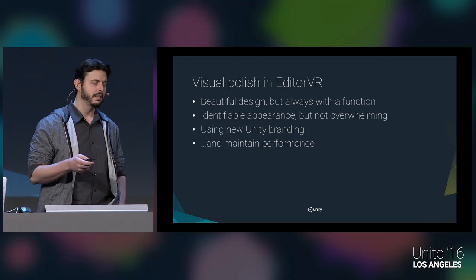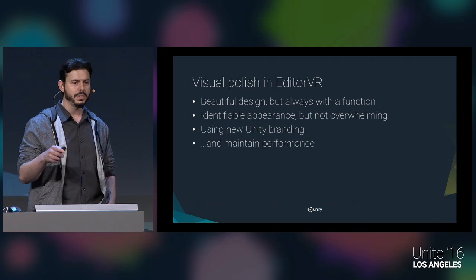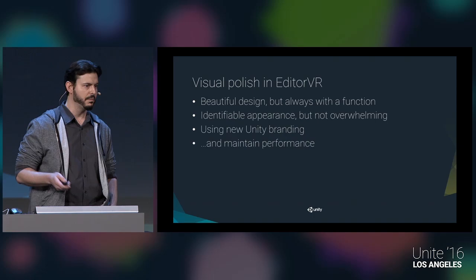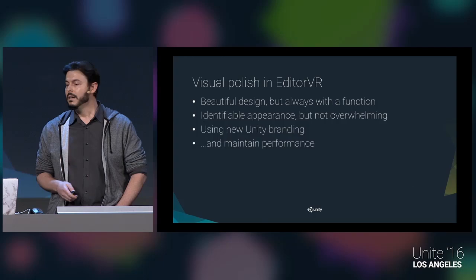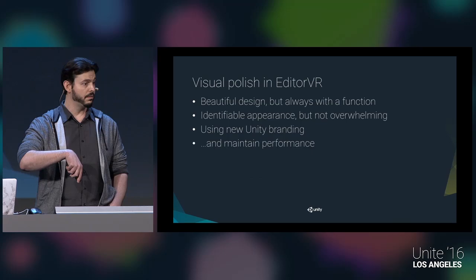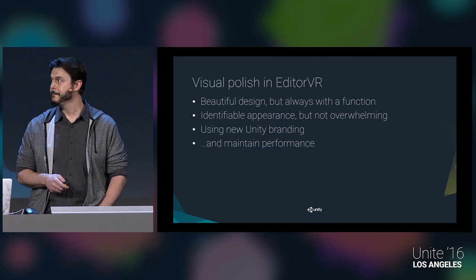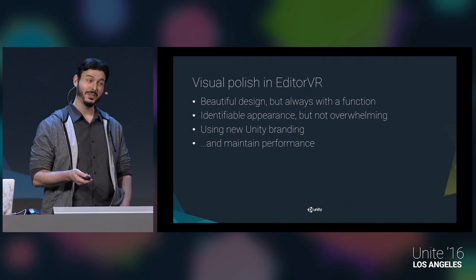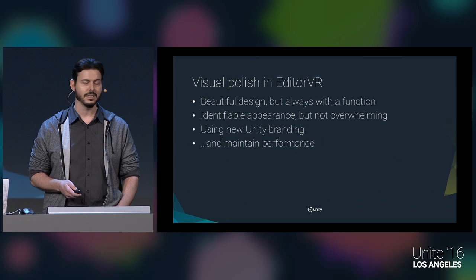Identifiable appearance is very important. Whether you're designing for a fire watch scene or a zombie graveyard scenario, you want to be able to look at these tools in any lighting, identify the aesthetic, and grab the one you need without it competing with your content. Along these lines, we've also started using the new Unity branding scheme — you've seen that in the Unite logo here at the convention. We have a new gradient, a set of swatches and palettes. And of course we must maintain performance, which anyone working in mobile or VR understands.